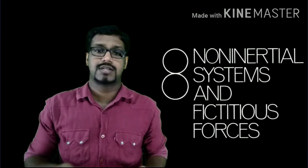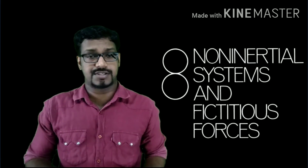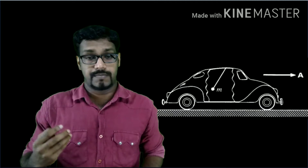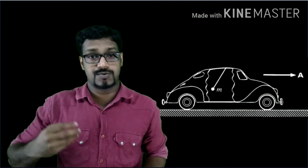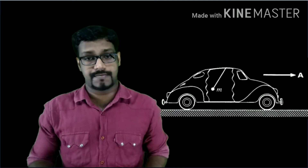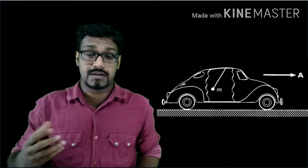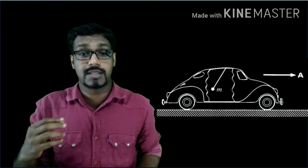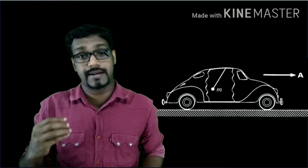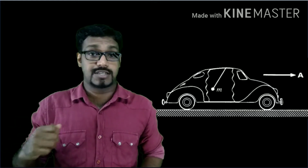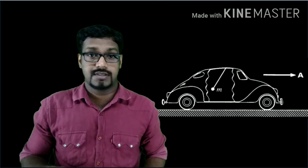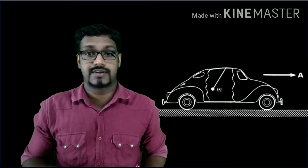In the last video we discussed about non-inertial frames of reference and fictitious forces, and we discussed how a pendulum moves inside an accelerating car. When you observe from the car, the pendulum behaves as if someone is pulling it in the direction opposite to the direction of acceleration of the car, and that force is known as the fictitious force.